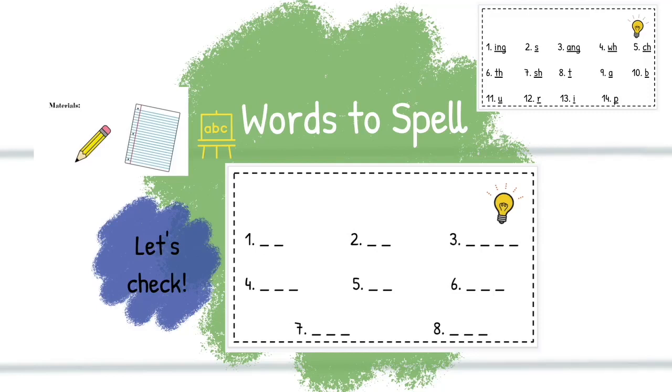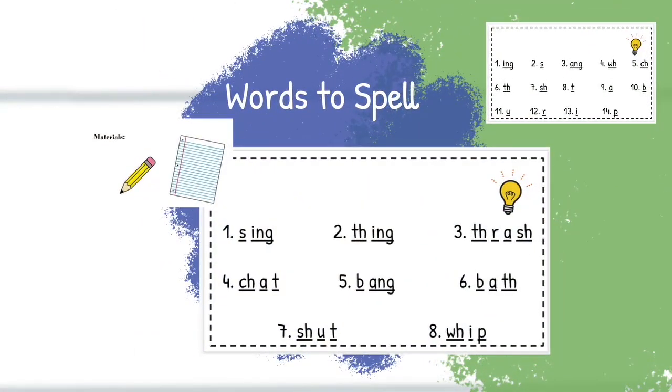Number six, bath. Good, bath. B-a-th. Number seven, shut, sh-u-t. And number eight, whip, wh-i-p. Now, if you look up in your sound bank, spoiler alert, do you have plain old W like wagon? No, you don't. So what sound do you have that says wh, like whistle? All right, let's check our words. Here they are. Those are the eight words spelled correctly. Again, if you need to pause to fix anything or double check or maybe you accidentally missed a sound, go ahead and do that now. Press play when you're ready.